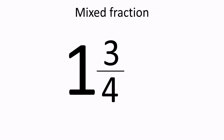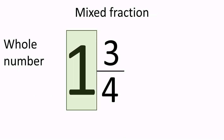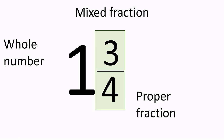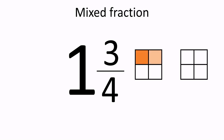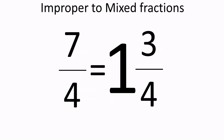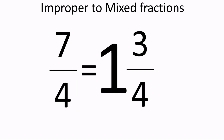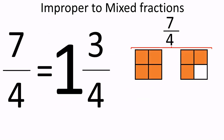A mixed fraction is formed by a whole number and a proper fraction. In this example, the denominator — bottom number — is four, so one whole is made out of four parts. And then we have three more parts, so we need three parts from the second whole. Did you notice how we can represent an improper fraction as a mixed fraction? Seven-fourths means that we have one whole made out of four parts and three parts from the second whole. But four parts out of four parts is one, so we can write it as one and three-fourths.